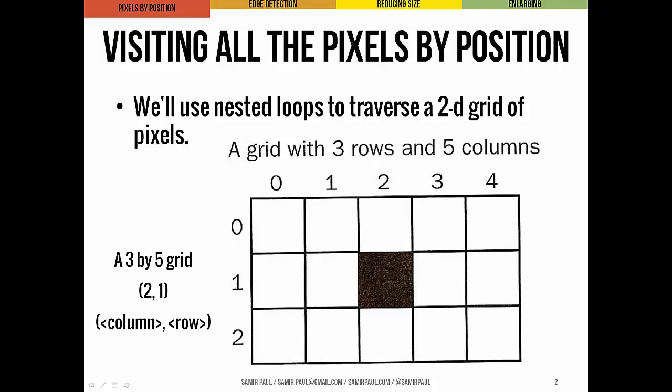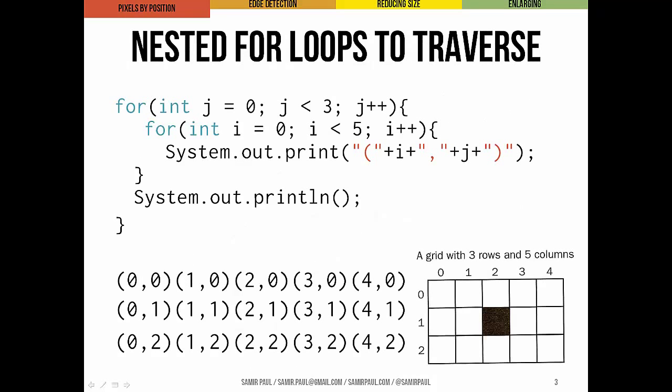The black pixel here is at coordinate 2 comma 1 — column 2, row 1. In the upper left corner we have 0, 0, which is the origin of our screen coordinate system.